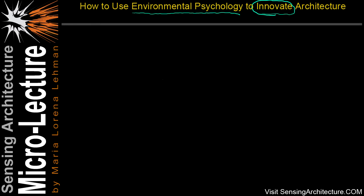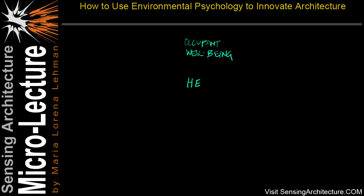With architectural design, it is important to know about the well-being of the occupants that use your building environments. For this, we must assess the health of our occupants, and we can break health down into five core or key elements.